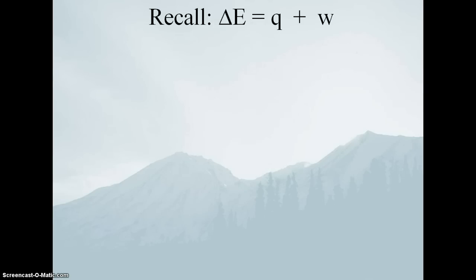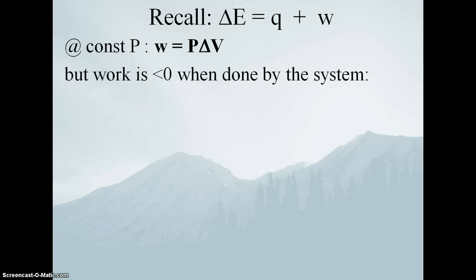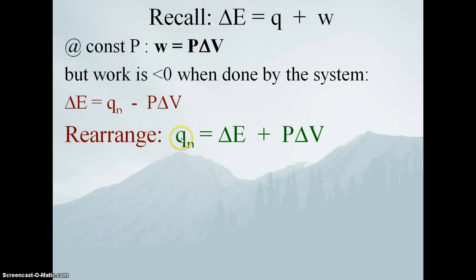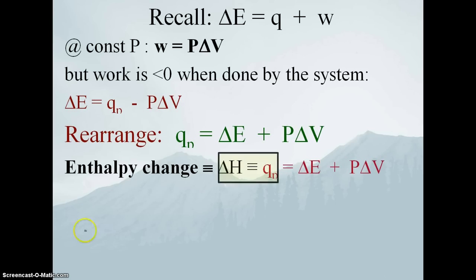Just a last little bit of math to get us to something more useful. We know that ΔE is q plus w, so the heat of reaction plus the work. Recall that work is equal to the pressure volume product. But work is less than zero when done by the system, so we're going to have to drop in this PΔV and account for the sign. This is q sub P, so that's heat of reaction at constant pressure. Heat of reaction at constant pressure is equal to ΔE plus PΔV. All we're doing is just rearranging the math here.